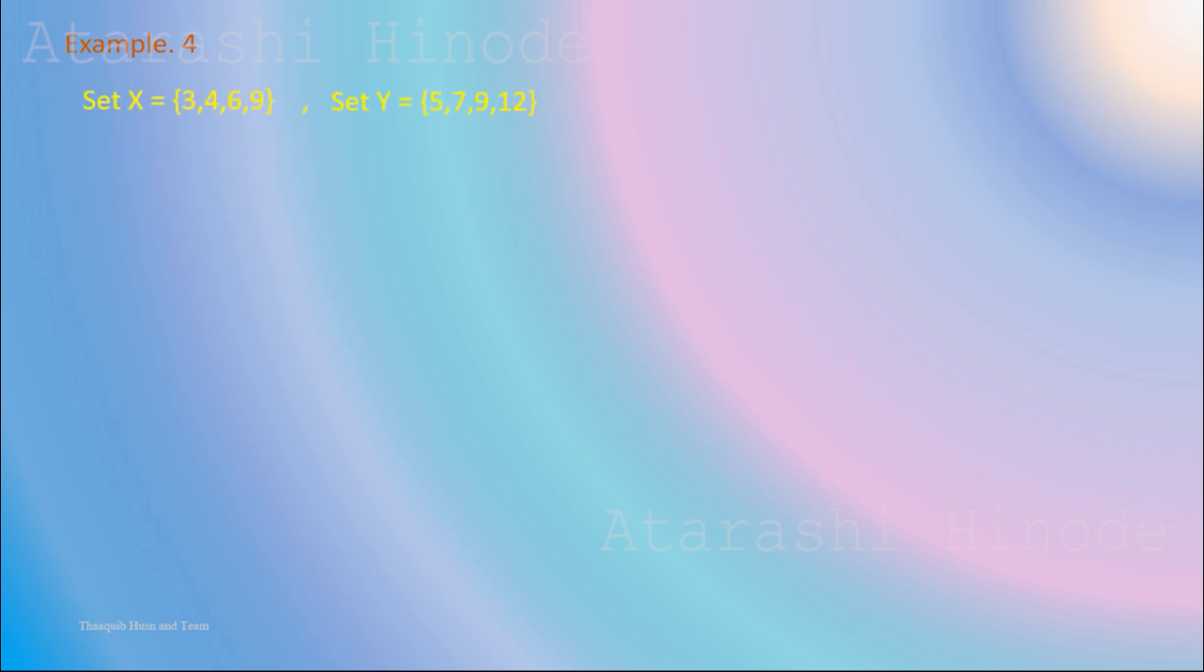This is the last example. Here, we have different sets with the same relation. Now, if you map the elements with respect to the relation, all the elements in X are having images in Y.